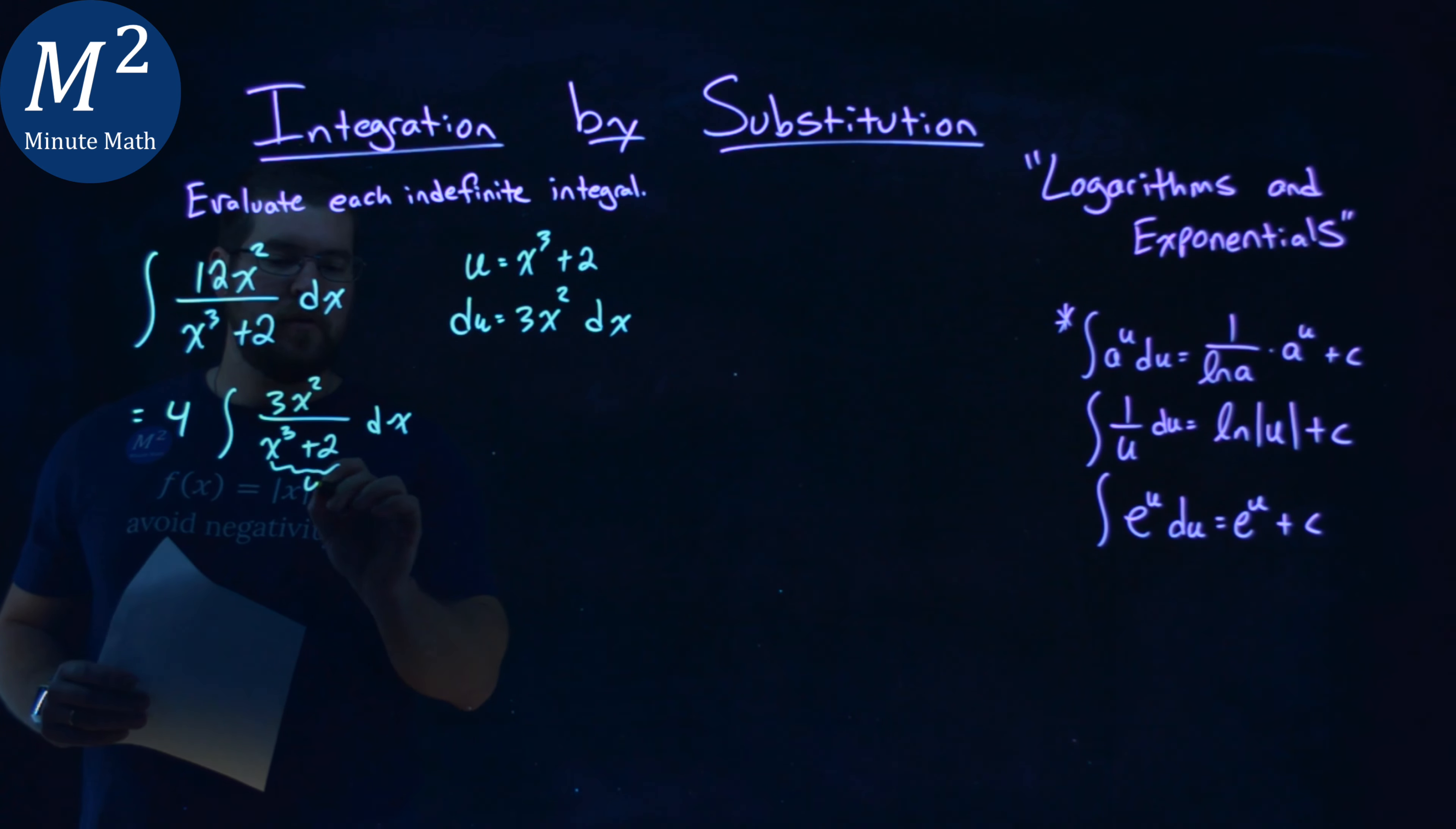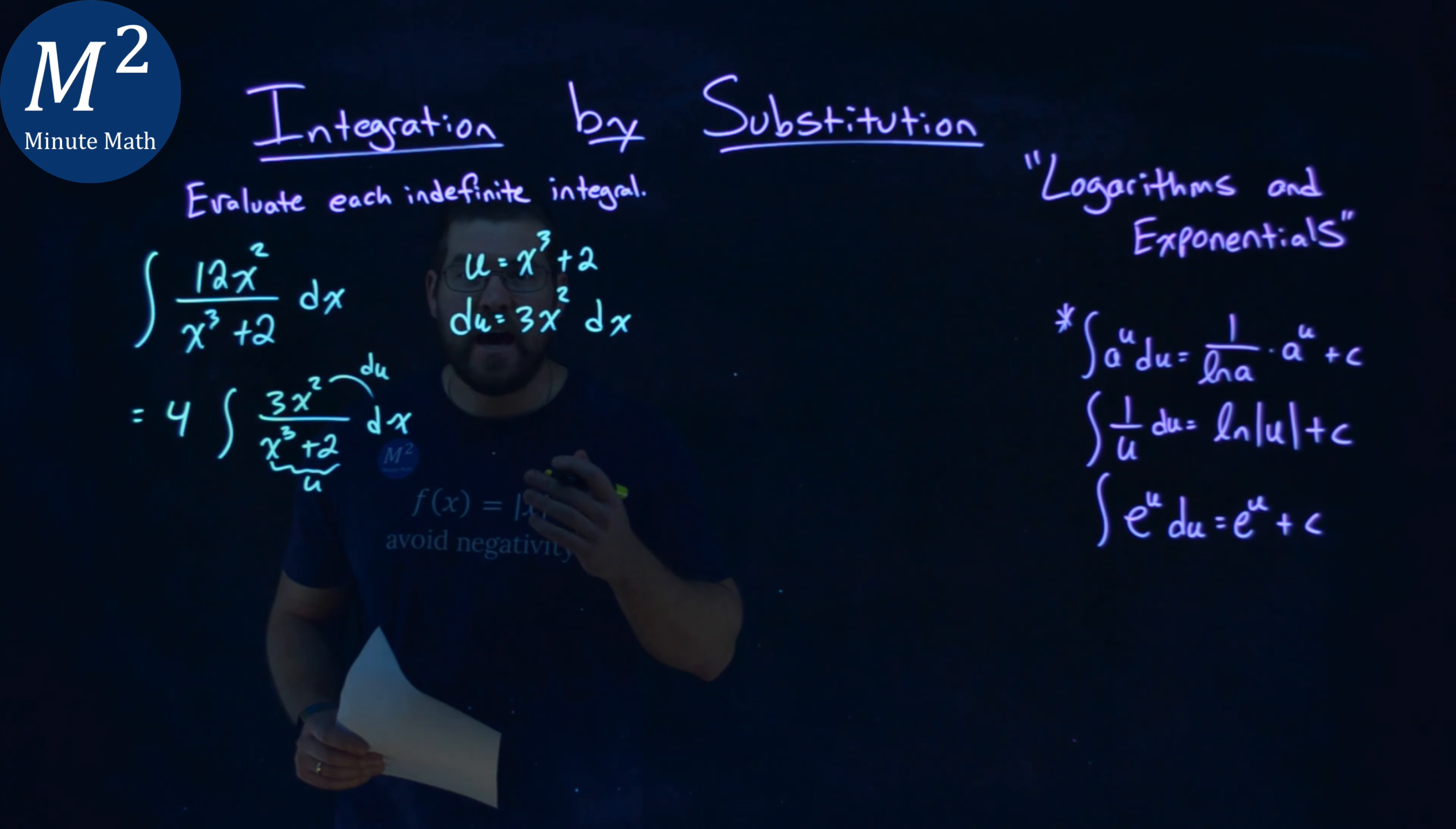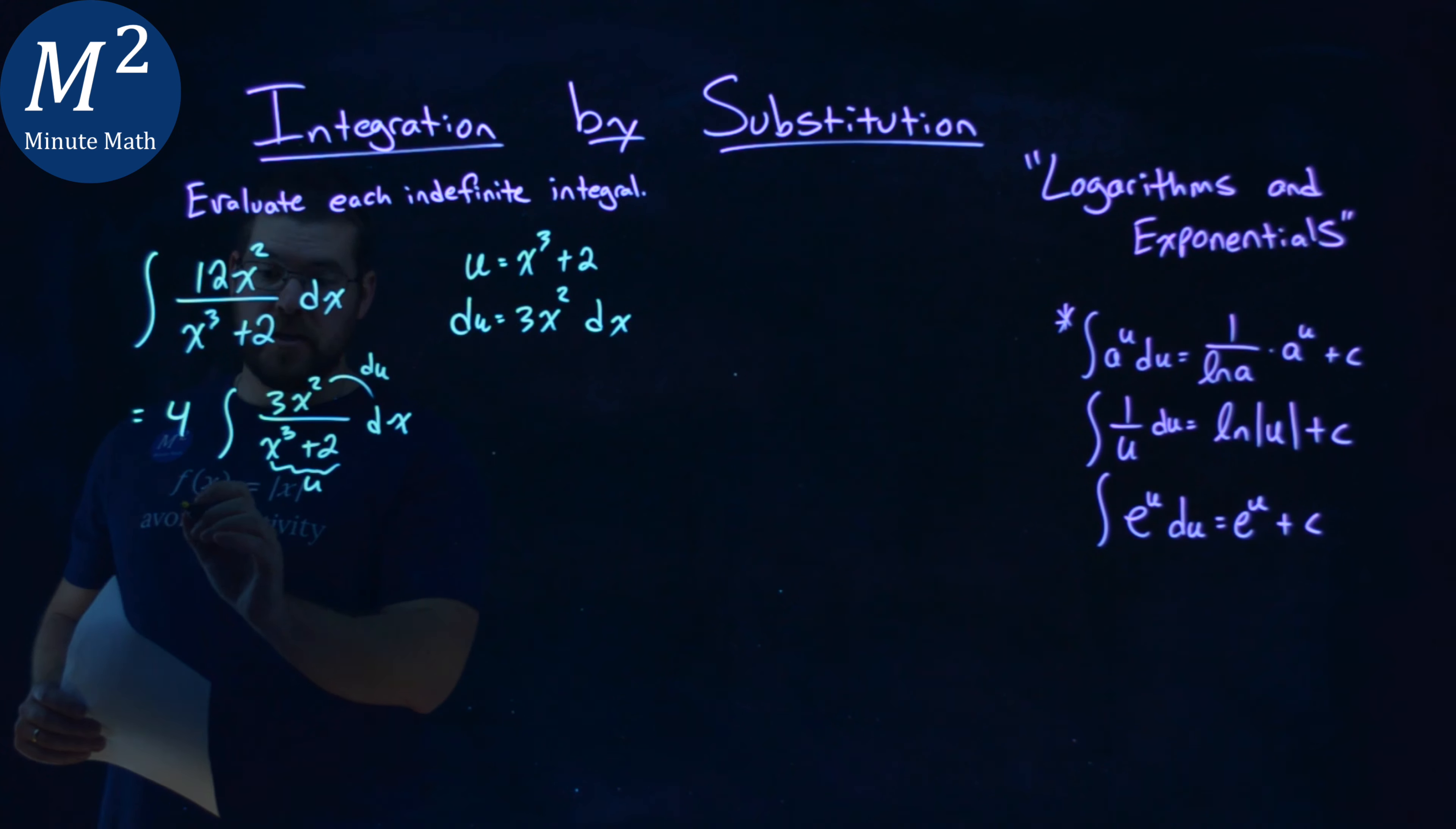Notice the denominator here is that u-value again, and these two parts—the numerator and the dx—is our du. And now we can directly substitute in u right there, and du.